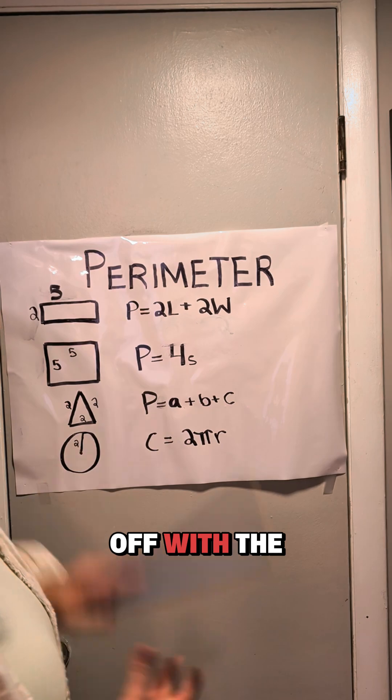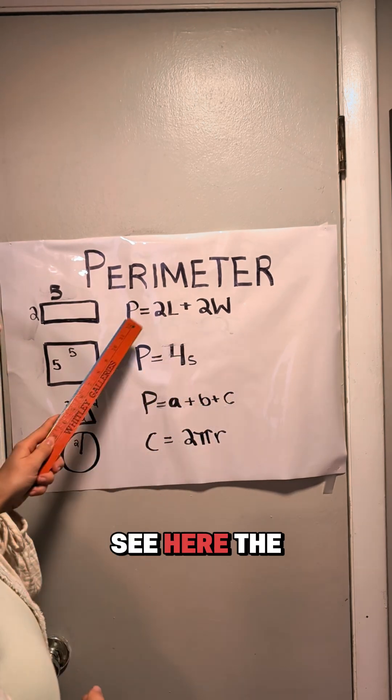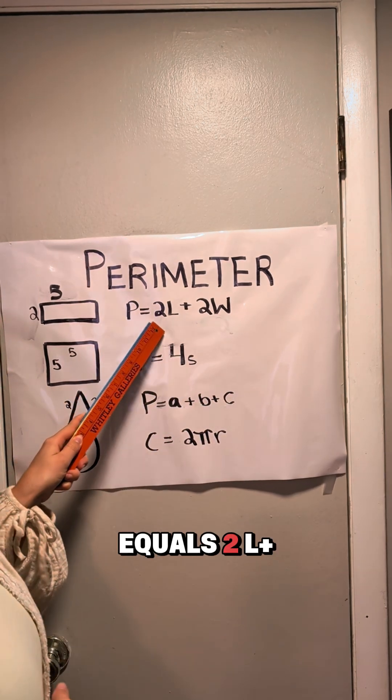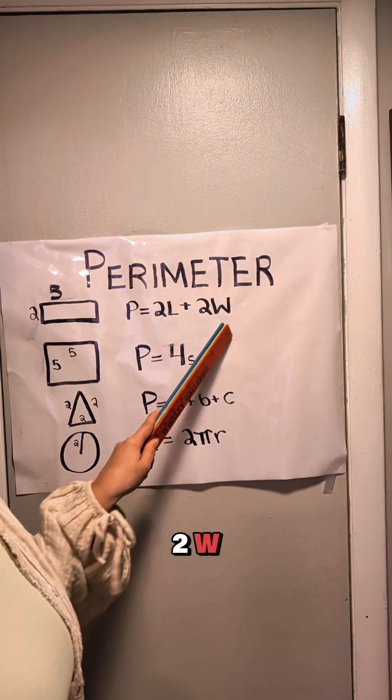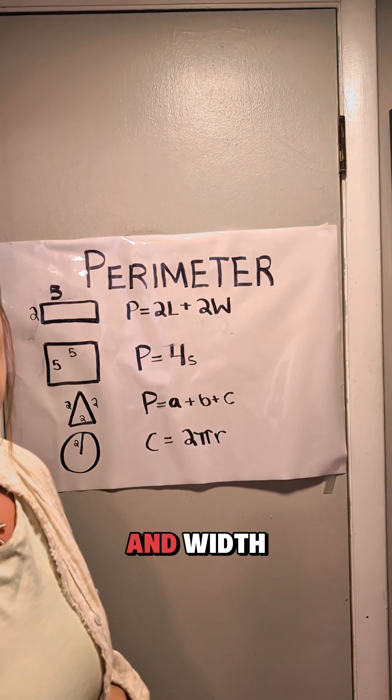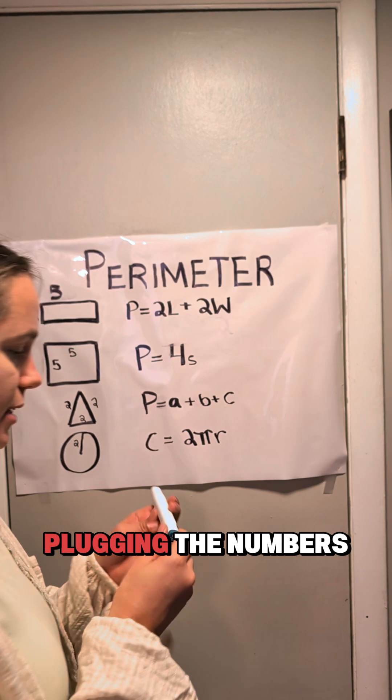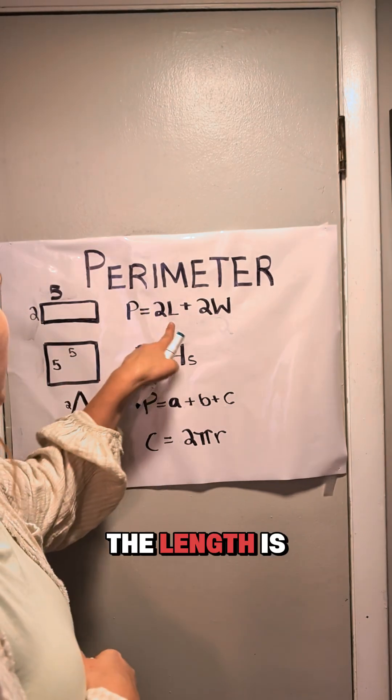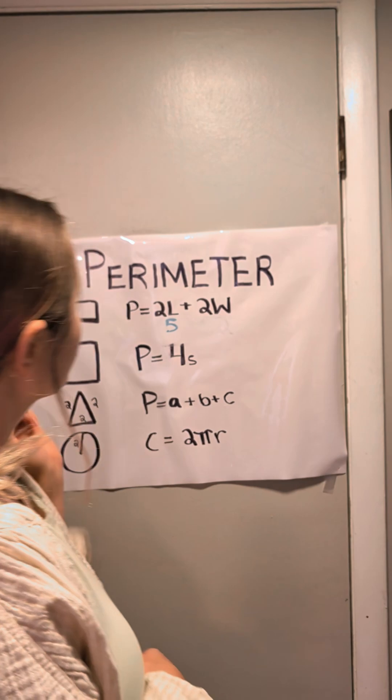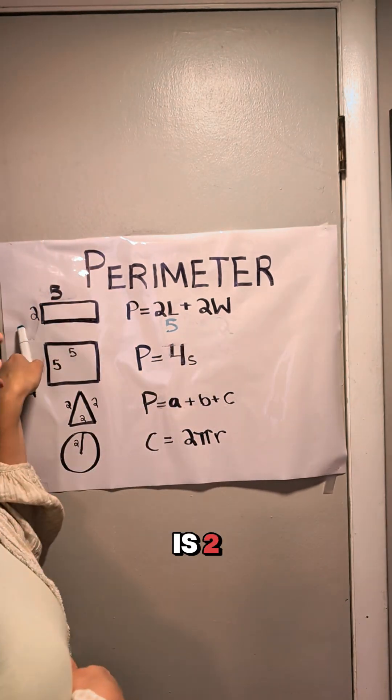First things first, we're going to start off with the rectangle. As you can see here, the formula is P equals 2L plus 2W, which is length and width. So we're going to start by plugging the numbers in. The length is 5, and the width is 2.